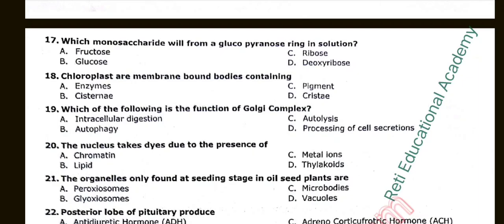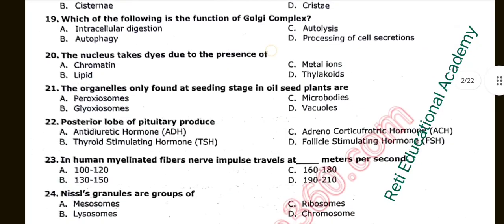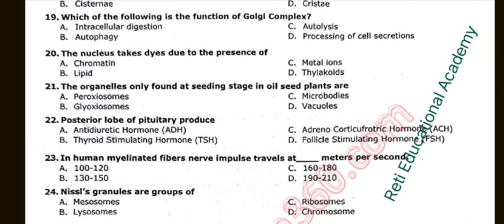Question number nineteen: Which of the following is the function of the Golgi complex? The correct option is D: Processing of cell secretions. Question number twenty: The nucleus stains deeply due to the presence of chromatin. Question number twenty-one: The organelles only found at the seeding stage in oil-seed plants are. The correct option is B: Glyoxysomes.